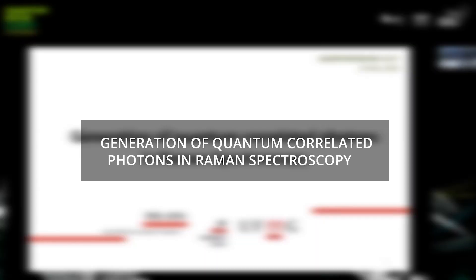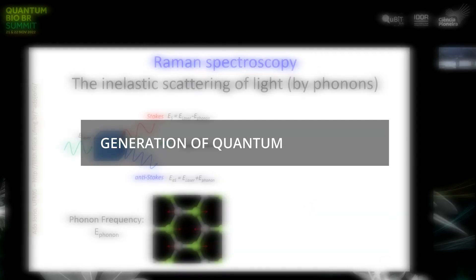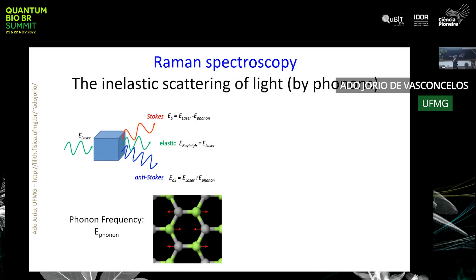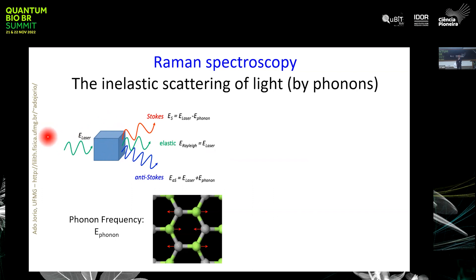Why are we talking about Raman spectroscopy today? Starting with light-matter interaction, if you shine a material with one specific wavelength, you will have a lot of Rayleigh scattering, but you also have inelastic scattering that can be Stokes or anti-Stokes, depending on whether the light loses or gains energy from the material — usually as quanta of vibration we call phonons.